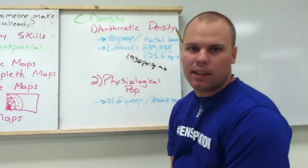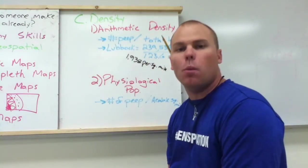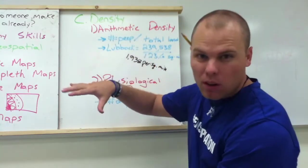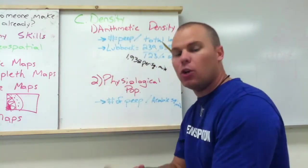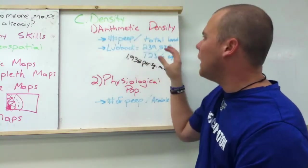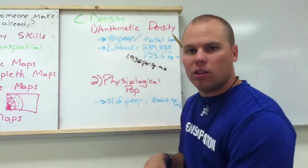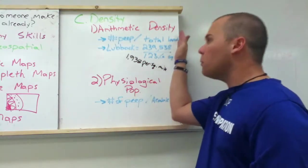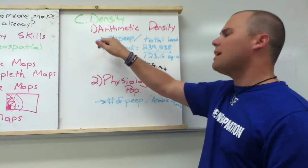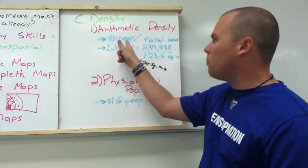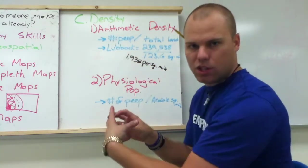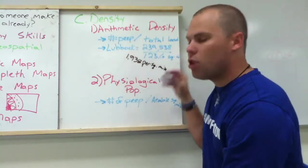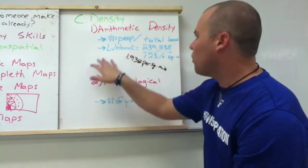The next aspect we're going to look at is density. Density is a numerical measurement of the relationship between people and space — land. There are two types of density. The first is arithmetic density. You take the number of people in an area and divide that by the total land area. For the city of Lubbock, there are about 240,000 people — 239,538 as of 2013 — with 123.6 square miles in Lubbock.